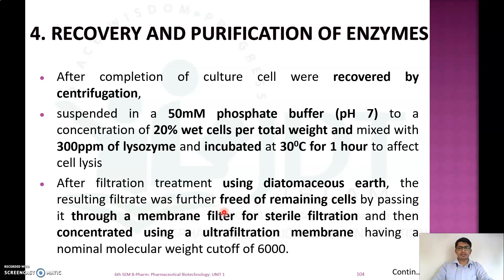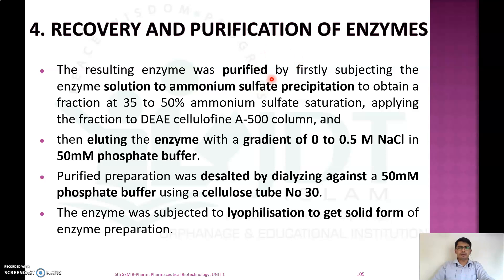After lysis, the mixture is filtered using diatomaceous earth. The resulting filtrate is further freed of remaining cells by passing through a membrane sterile filtration, then concentrated using an ultrafiltration membrane with a nominal molecular weight cutoff of 600 daltons. The enzyme is then purified by ammonium sulfate precipitation to obtain a fraction of 35–50% saturation, followed by DEAE-cellulose Finea-500 column chromatography, eluting with a gradient of 0 to 0.5 M sodium chloride in 50 mM phosphate buffer.